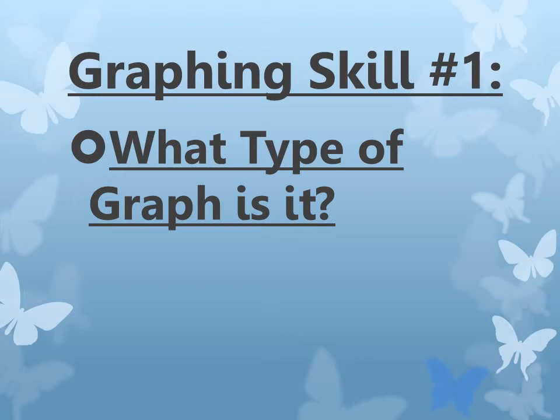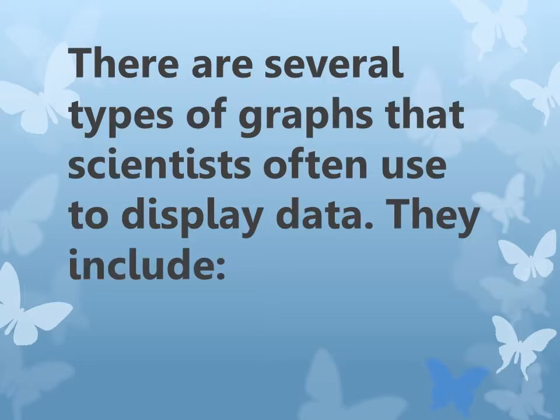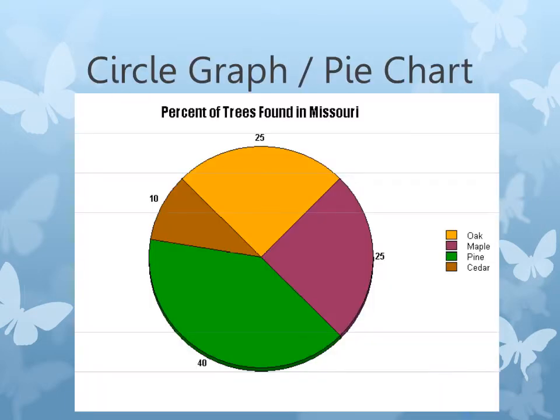In this section we're going to talk about graphing, and the very first skill that you need to learn is to figure out what kind of graph you need to make. There are several types of graphs that scientists use to display their data, and we're going to talk about three kinds.